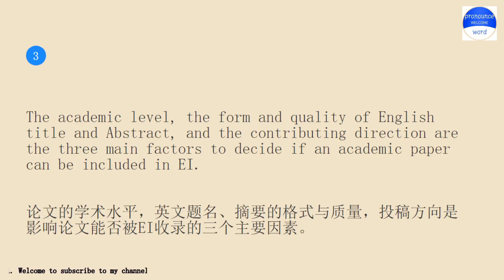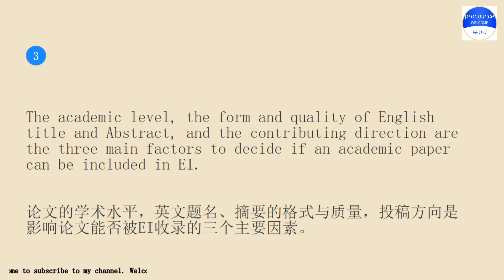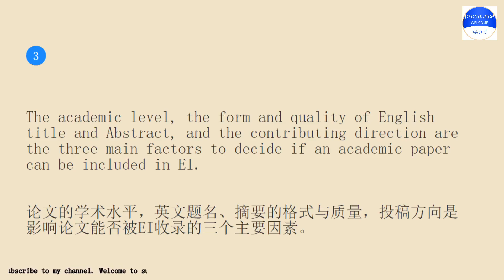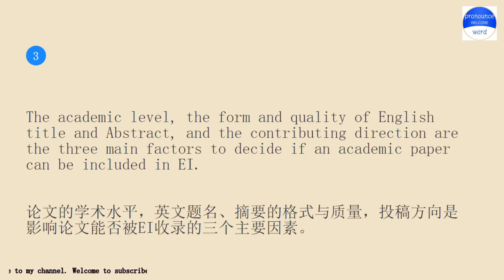The academic level, the form and quality of English title and abstract, and the contributing direction are the three main factors to decide if an academic paper can be included in EI.